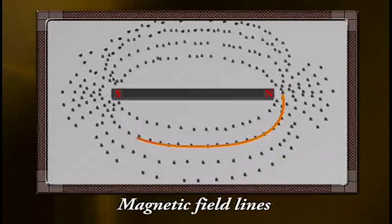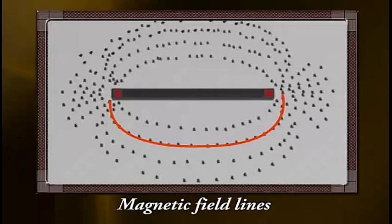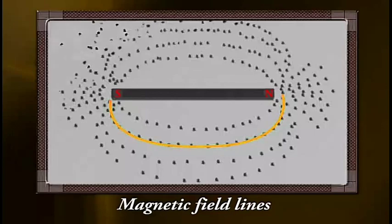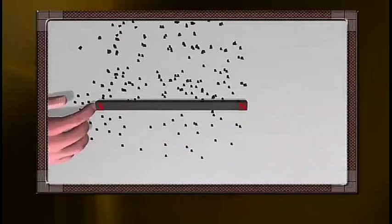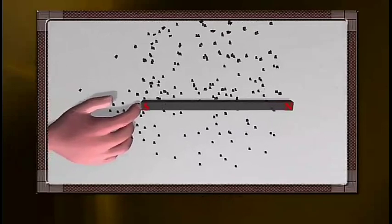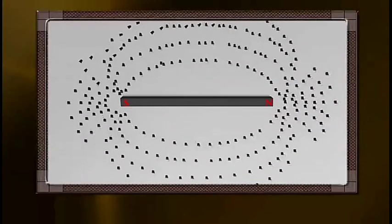These curved parts along which the iron filings arrange themselves due to the force acting on them in the magnetic field of the bar magnet are called the magnetic field lines. If the position of the magnet is changed, the arrangement of the iron filings also changes.